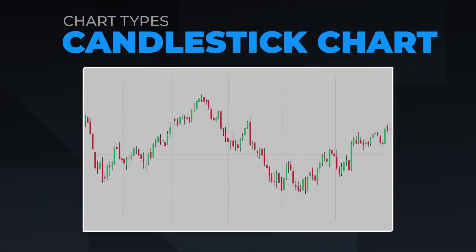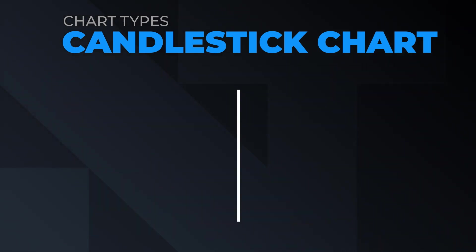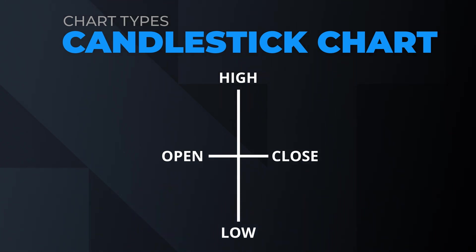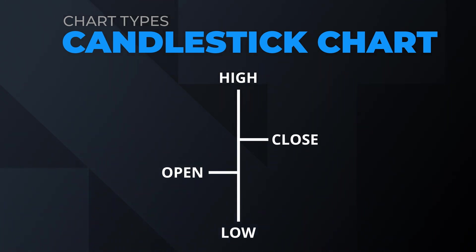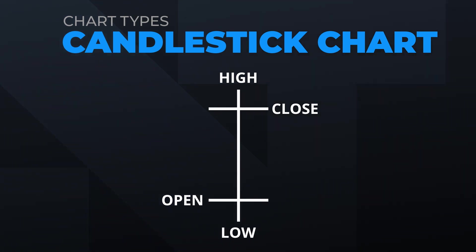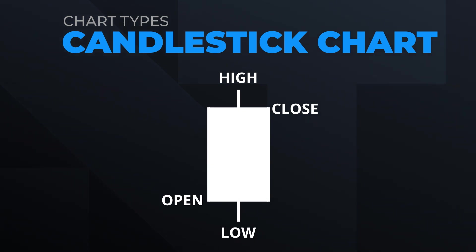Candlestick charts are a popular variation of the bar chart. Like bar charts, candlestick charts use open, high, low, and close data to create the candle. The main difference is that the body of the candlestick is formed by extending the hash marks at the open and close prices and forming a rectangle with those hash marks as the top and bottom.